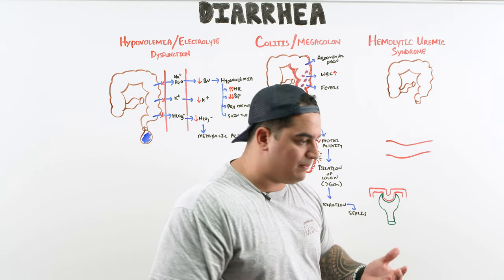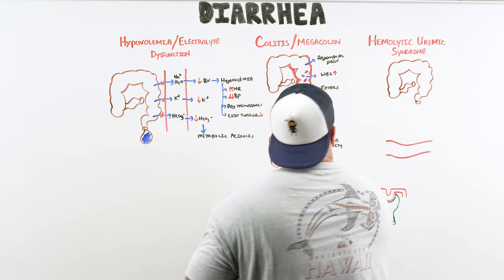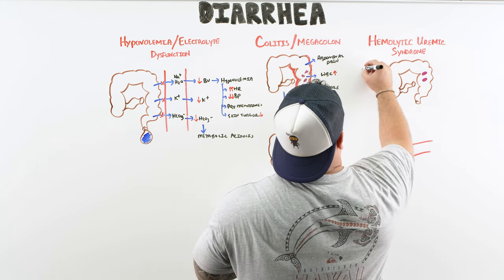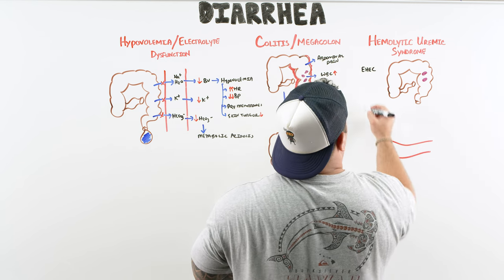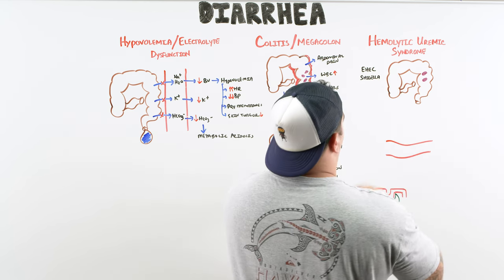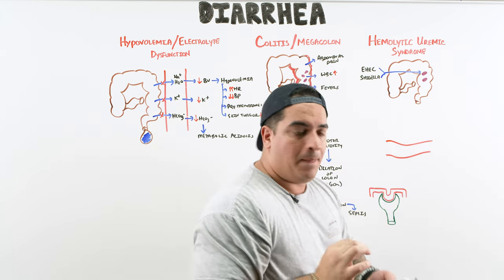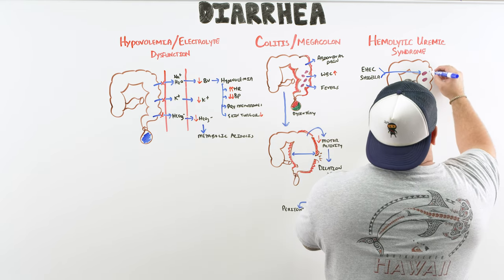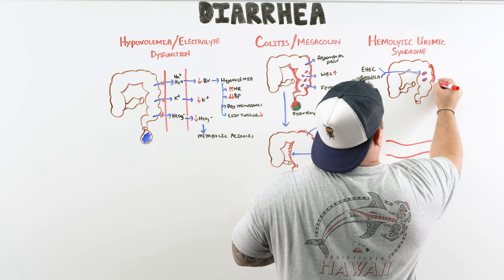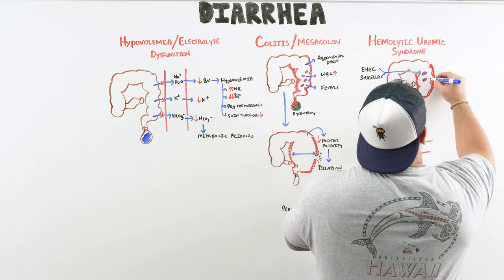The last complication is hemolytic uremic syndrome (HUS). The two bugs to be most cautious about here are enterohemorrhagic E. coli and Shigella. These bacteria can cause massive colitis-type inflammation and then translocate — bacterial translocation — across the gut into the bloodstream.